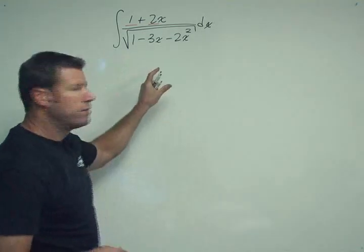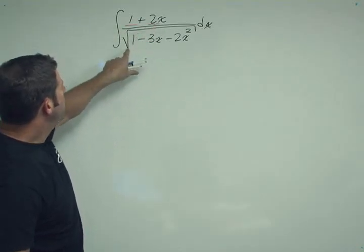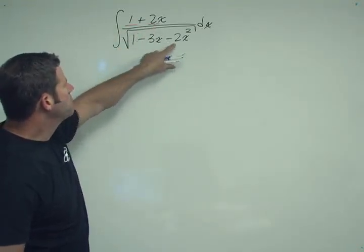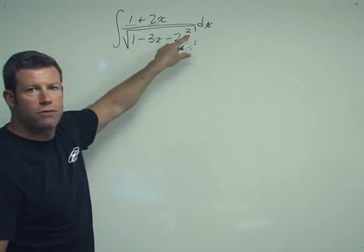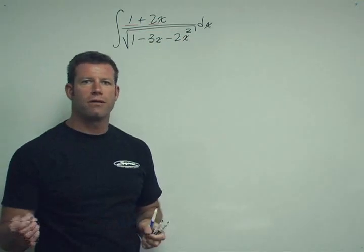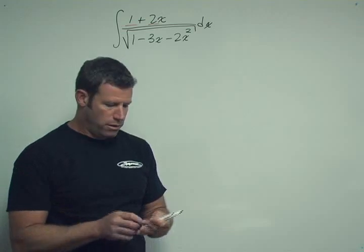The problem today: integral of 1 plus 2x divided by the square root of 1 minus 3x minus 2x squared, that whole quantity square rooted. So the things that make this difficult, it doesn't easily fall apart, right?